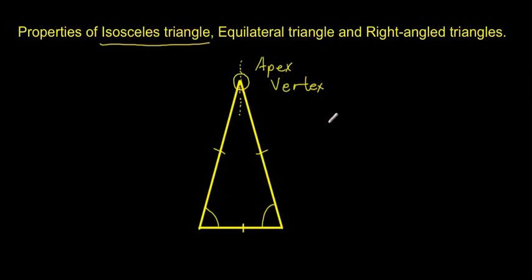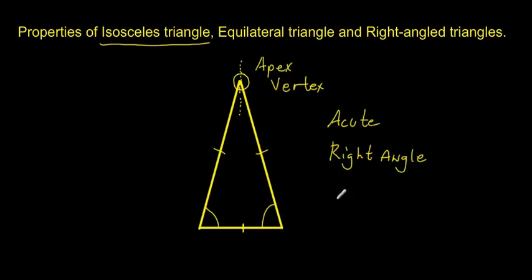In this particular case, this is an acute isosceles triangle, but you can also get a right angle isosceles triangle. The way we decide whether it is acute or right angle is by looking at the apex — the apex angle tells us what type of isosceles triangle it is.